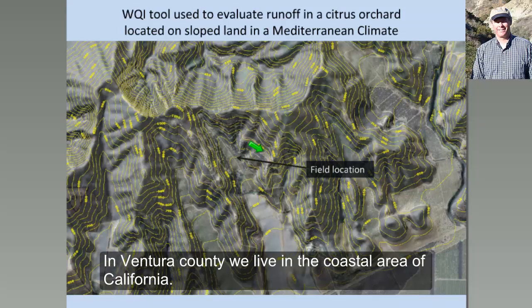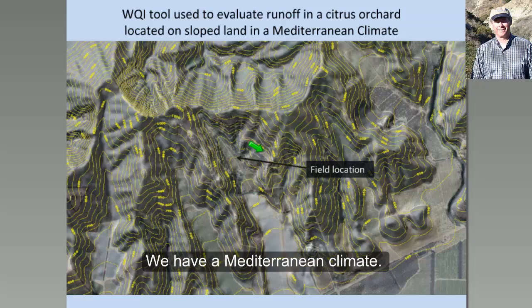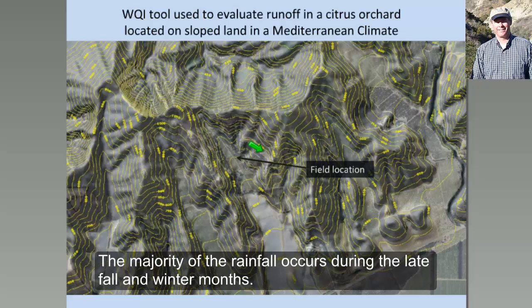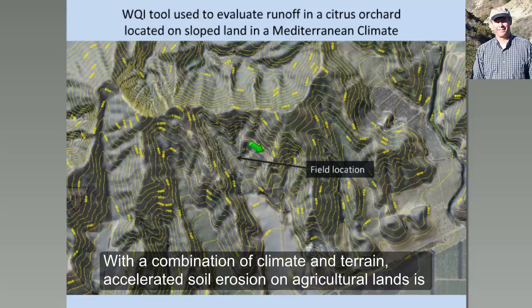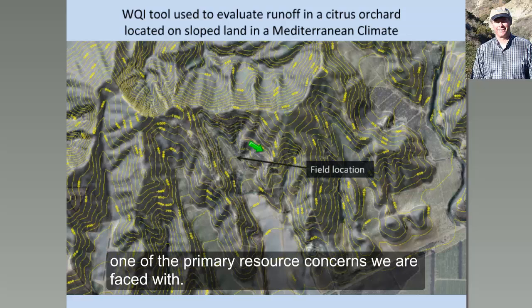Here in Ventura County, we live in the coastal area of California, so we have a Mediterranean climate. The majority of our rainfall occurs during the late fall and winter months, and the terrain is very hilly with many soils subject to erosion. With that combination of climate and terrain, accelerated soil erosion on agricultural lands is one of the primary resource concerns we are faced with.